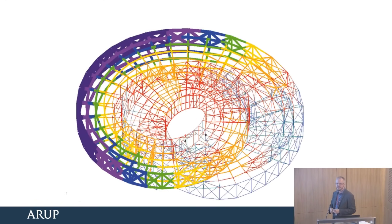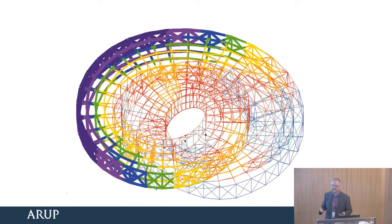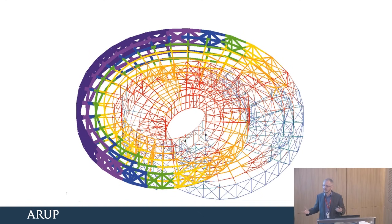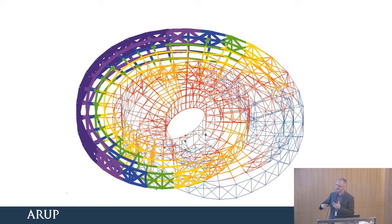The model contains simplification. We don't generally model connections in the building model, for example. Our mechanical engineering colleagues might model a single component down to absolute final detail. For a building model, we model just beams as 1D elements, maybe some 2D elements in there for slabs and shells and so on. But it's a simplification. We estimate the structural sizes first, work out the forces, then maybe refine those, and then look at the connections and drill down into detail.